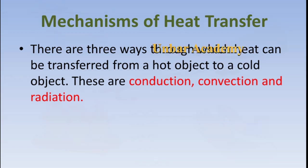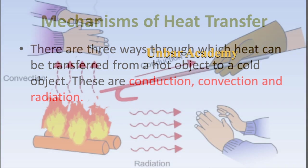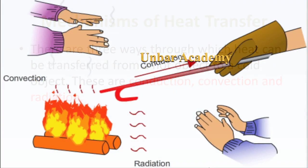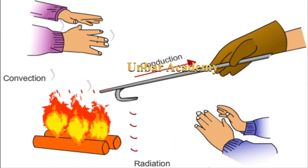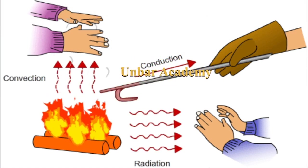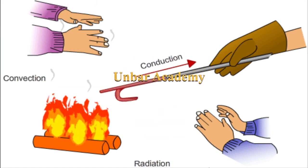There are three ways through which heat can be transferred from a hot object to a cold object. These are conduction, convection, and radiation.